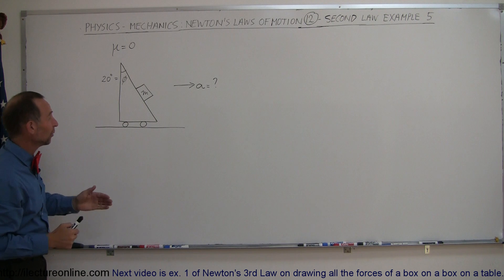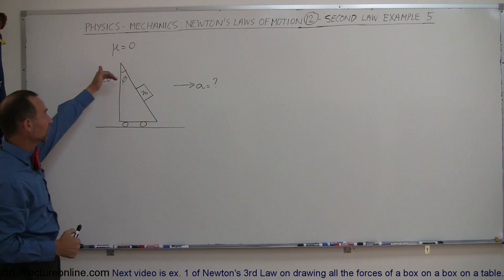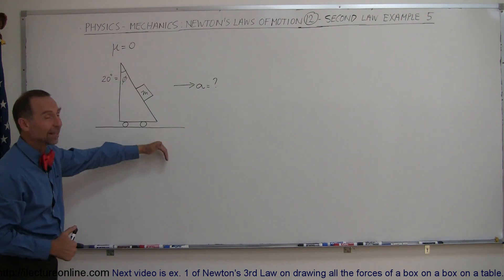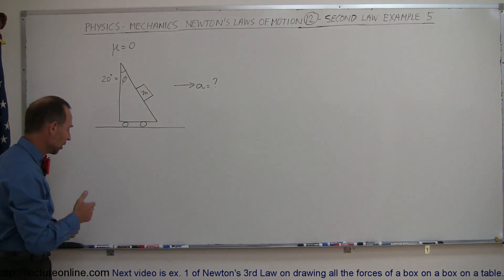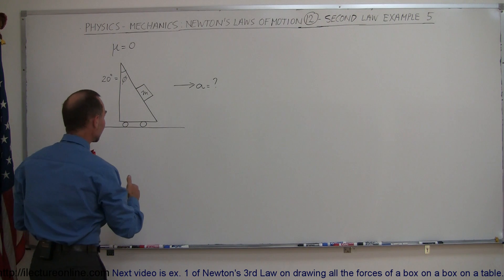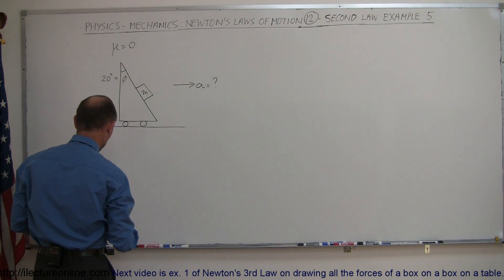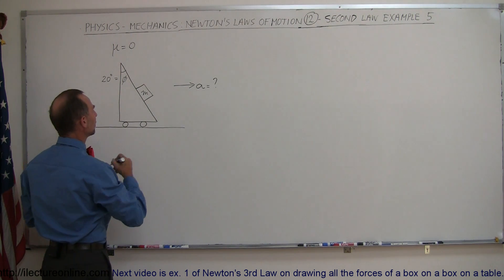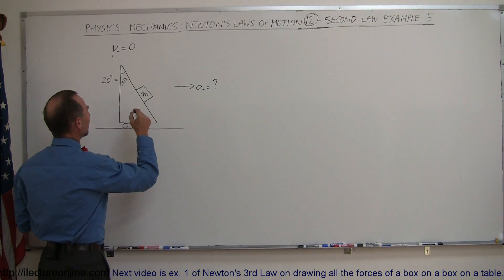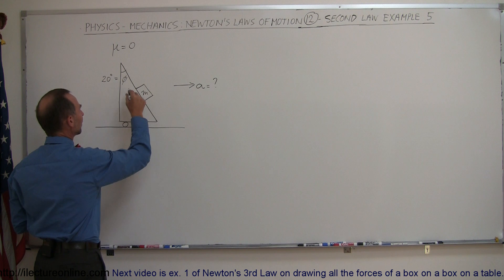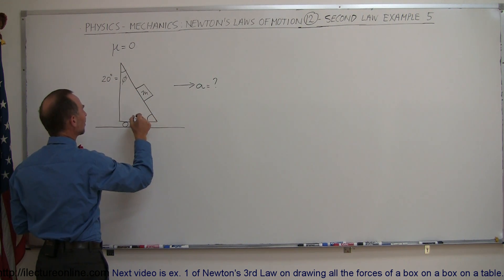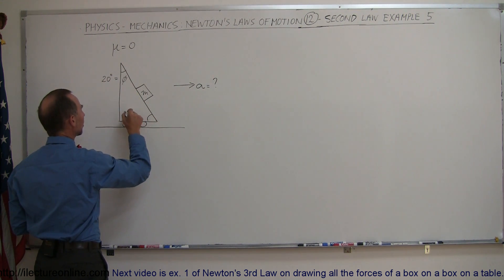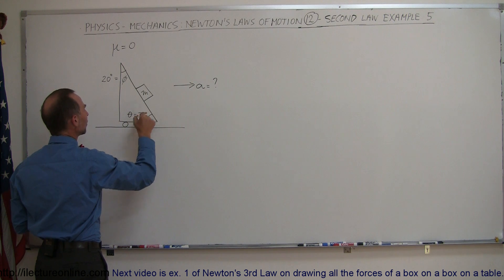If the wedge wasn't accelerating, the block would simply slide down and accelerate along the slanted slide. We can figure out what that acceleration would be by saying: if this angle here is 20 degrees, then this angle here must be 70 degrees, so let's call it theta equals 70 degrees.